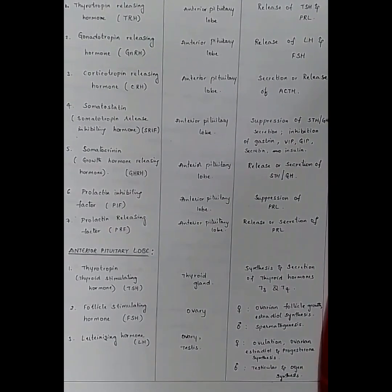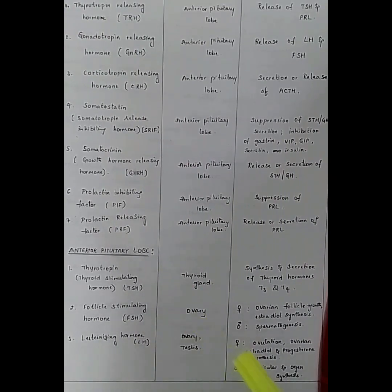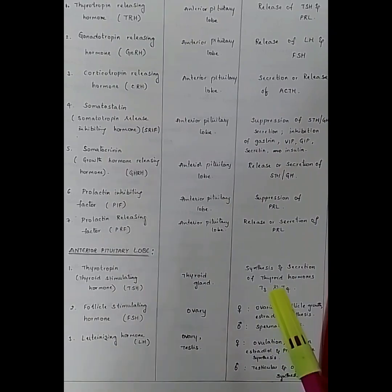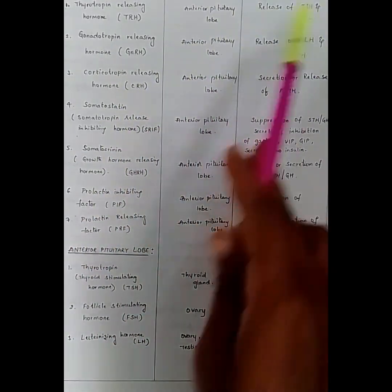Now let us see the hormones secreted by different endocrine glands. Hormones secreted by the hypothalamus: thyrotropin releasing hormone (TRH), which is released in the anterior pituitary lobe and is helpful in the release of TSH and prolactin.